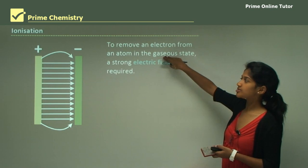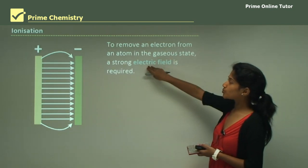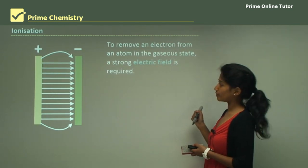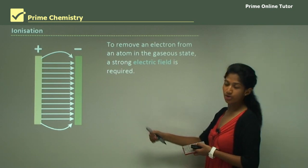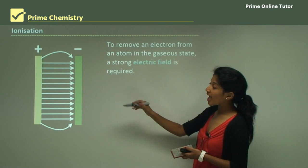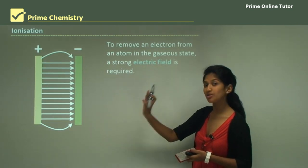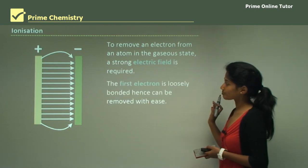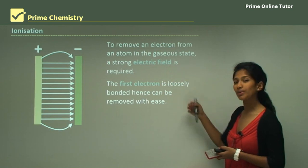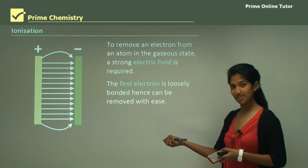It is quite hard to remove an electron when an atom is in its gaseous state, so very high energy is required, provided by an electric field. The electric field is drawn with two plates — one positive and one negative — with field lines going from the positive terminal to the negative terminal. The first electron is loosely bonded and can be removed with ease, as it is quite far away from the nucleus.